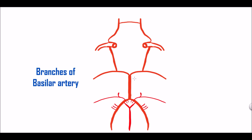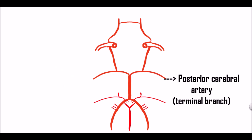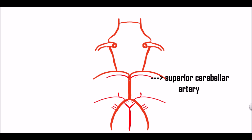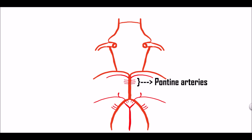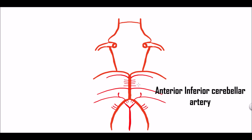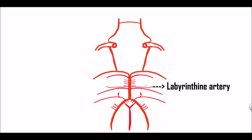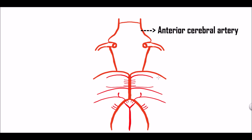Now let us see the branches of the basilar artery. It terminates as the posterior cerebral artery — we have already seen that. So this is the posterior cerebral artery, the terminal branch of the basilar artery. Just next to it we can see the superior cerebellar artery. Then we can see four to five small pontine arteries supplying the pontine surface. Then we can see the anterior inferior cerebellar artery. And in between the two we can see the labyrinthine artery. So these are the branches of the basilar artery.